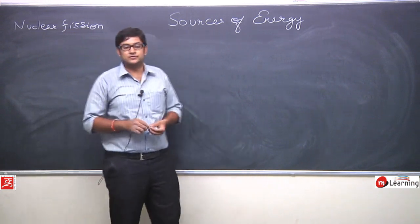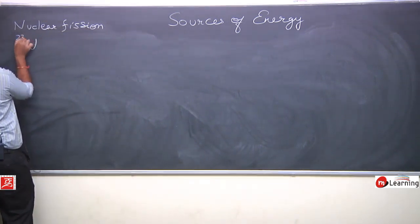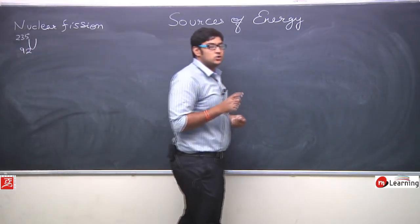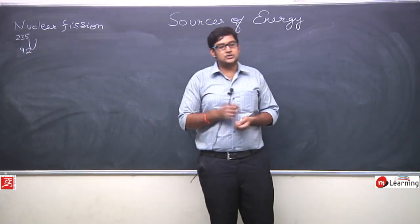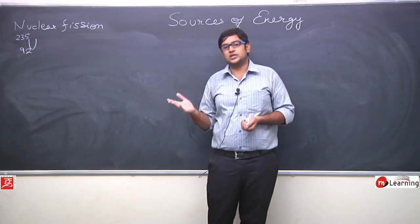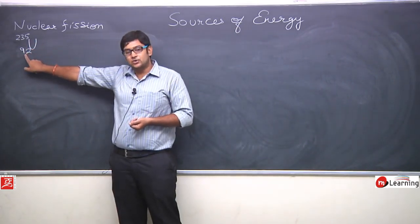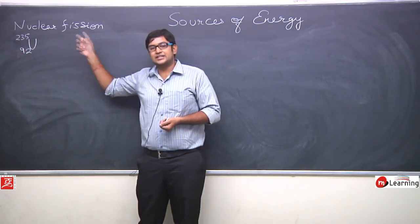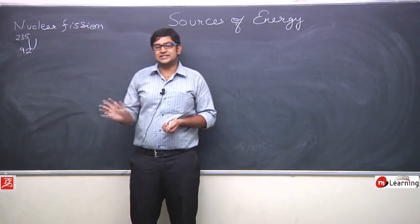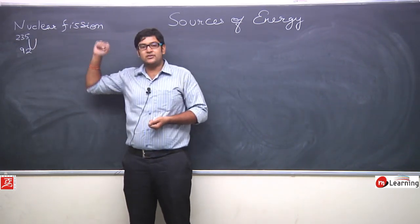Now, if we write the reaction of nuclear fission, we will consider uranium-235 (U-235). What is U-235? It is basically an isotope of uranium. Isotopes are elements with the same atomic number but different atomic mass. Uranium's atomic number is 92 and atomic mass is 235. There are also U-236, U-237, U-238 and other isotopes, but the one useful for us is uranium-235.